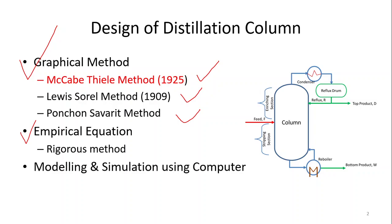The second broad classification is empirical correlations. This is the rigorous method — not an easy method. It requires many calculations and many steps. However, it is more practical and more useful compared to the graphical methods. Graphical methods normally give approximate and tentative values, not the exact values of the distillation column design. In empirical equations we use typical equations, which is why this is called the rigorous method. To solve these rigorous calculations and equations, we can use the computer.